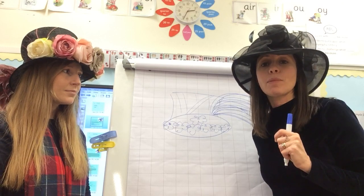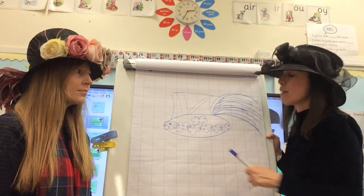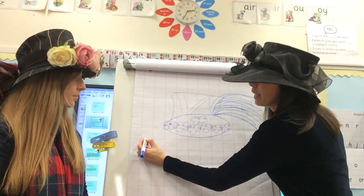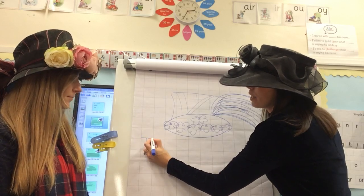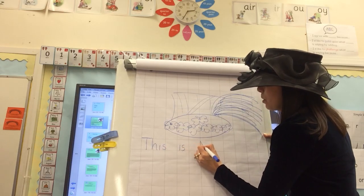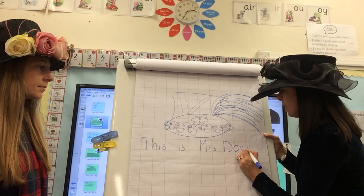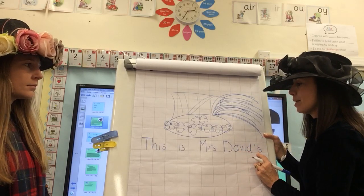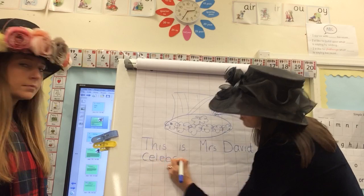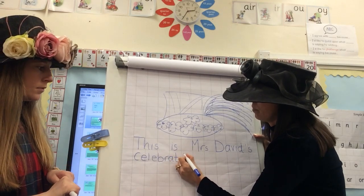Now I'm going to have a little think about some sentences that I'm going to write about it. I'm going to start with: 'This is Mrs David's celebration hat. It's a hat I would wear to a party.' I need a capital letter to start. Every sentence starts with a capital letter. Capital letters for somebody's name because they are important. This is Mrs David's — apostrophe S. Because the hat belongs to me I need to use an apostrophe S. This is Mrs David's celebration hat.